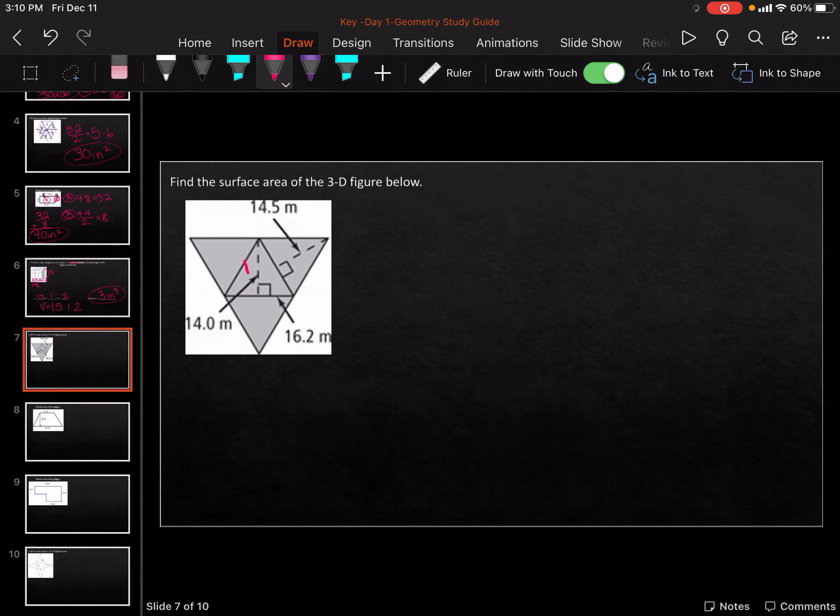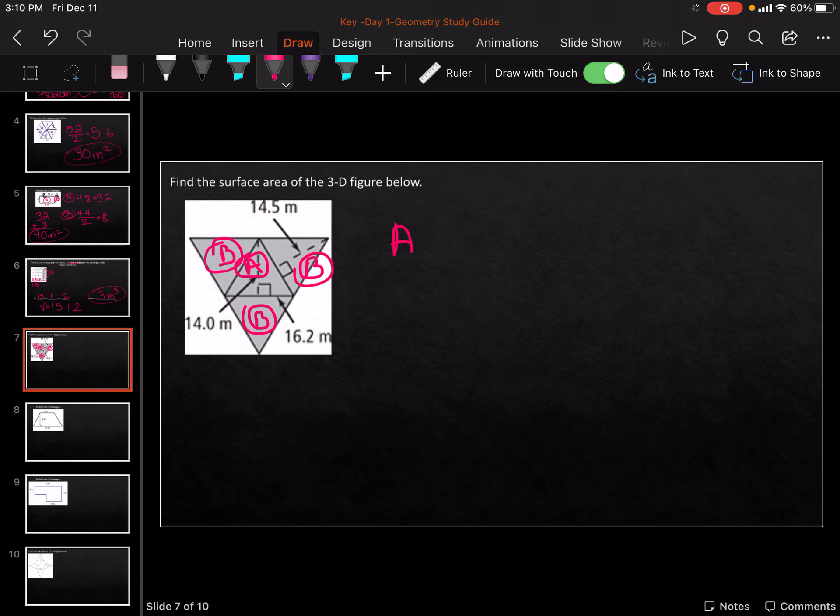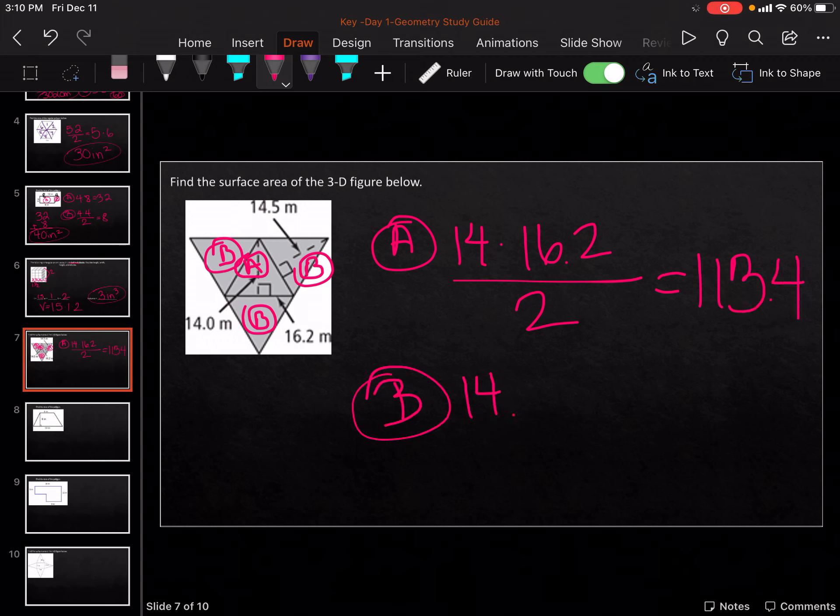For this next one, A is the base, and then our Bs are our triangles going all the way around. So for A, it's going to be 14 times 16.2 divided by 2, because it's a triangle. 14 times 16.2 is 226.8 divided by 2, gets me 113.4. Then for B, it's 14.5 times 16.2 divided by 2, gets me 117.45.